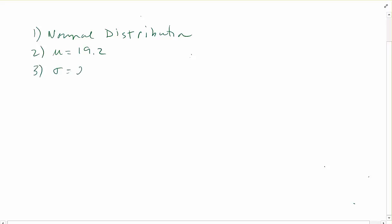So in this problem we can see number one that we have a normal distribution. We have the mean which is 19.2 and we have the standard deviation which is 2.5. So we have a normal distribution, average is in the center at 19.2, standard deviation 2.5.